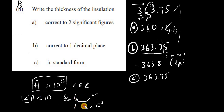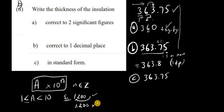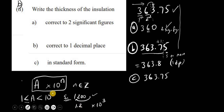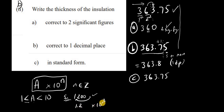For 1200 in standard form: the point is at the end, so shift it after the first significant figure, giving 1.200. We passed 3 digits going left — one, two, three — so it's 10 to the positive 3. We don't need the trailing zeros, so the answer is 1.2 × 10³. Checking: 1.2 times 1000 — shift the point once to get 12, again for 120, again for 1200. Correct.